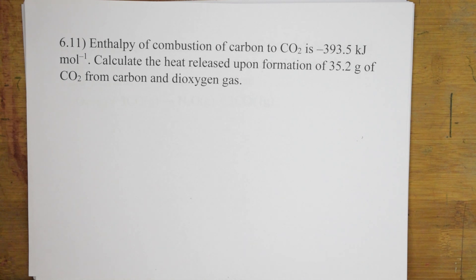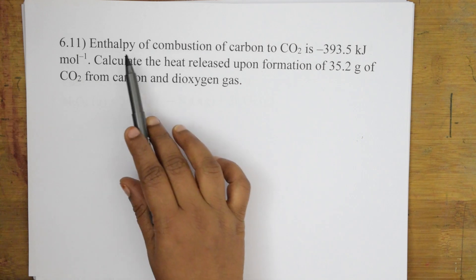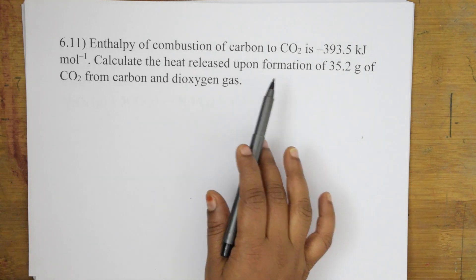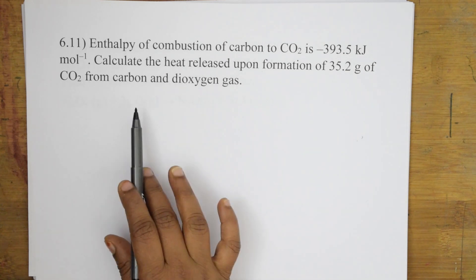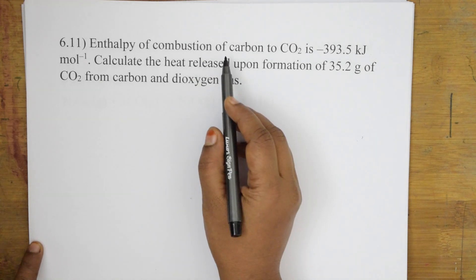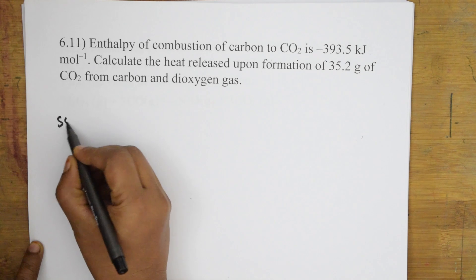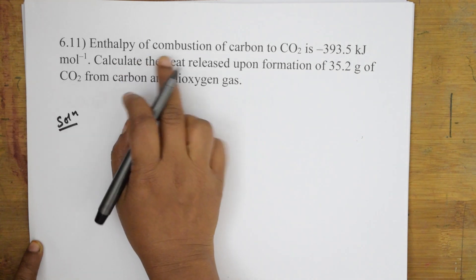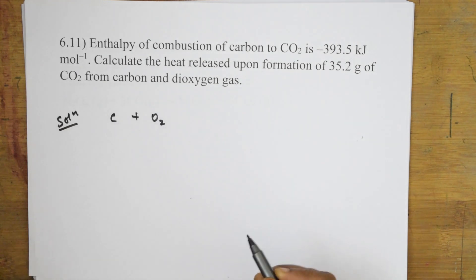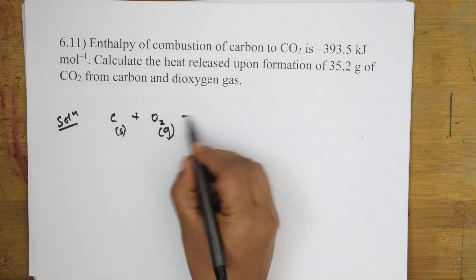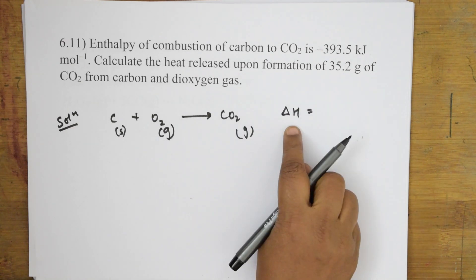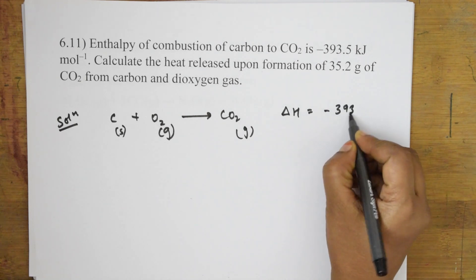Let's start with question 6.11 of your NCERT. The enthalpy of combustion of carbon to carbon dioxide is minus 393.5 kilojoules per mole. Calculate the heat released upon formation of 35.2 grams of carbon dioxide from carbon and dioxygen gas. Let's write the reaction: carbon (solid) plus oxygen (gaseous) gives carbon dioxide (gaseous). The delta H combustion value is minus 393.5 kilojoules per mole.